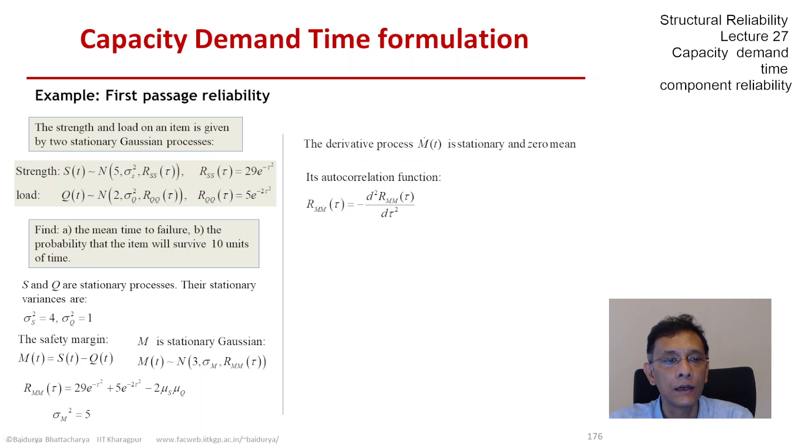There is another result which we have not learned formally: the autocorrelation function for M dot, the derivative process, in such situations is the second derivative of the autocorrelation of the parent process times minus 1. So it is the negative of the second derivative.